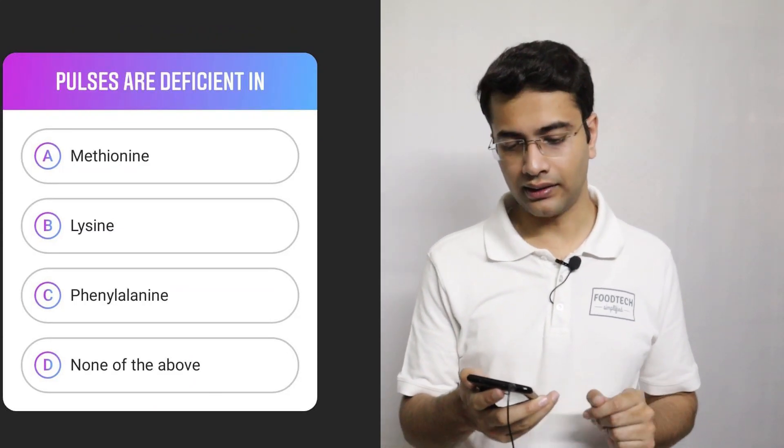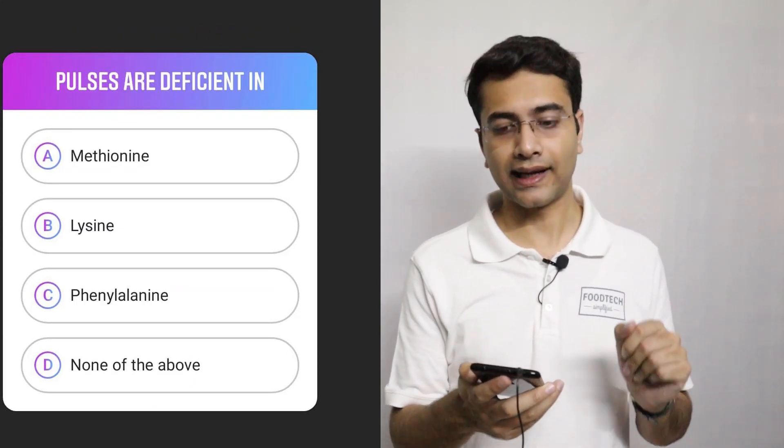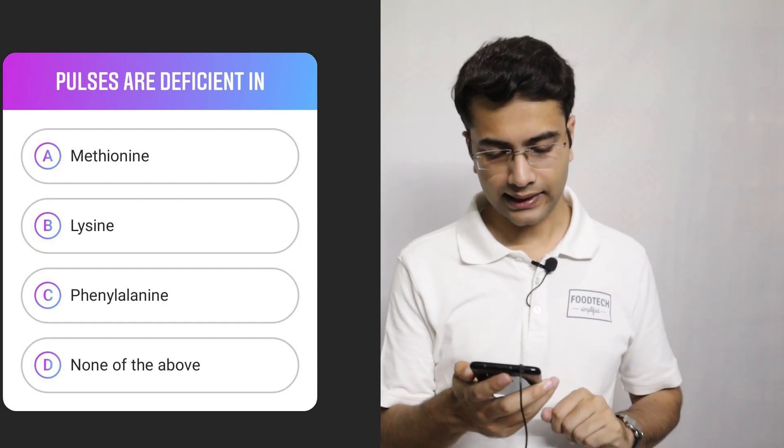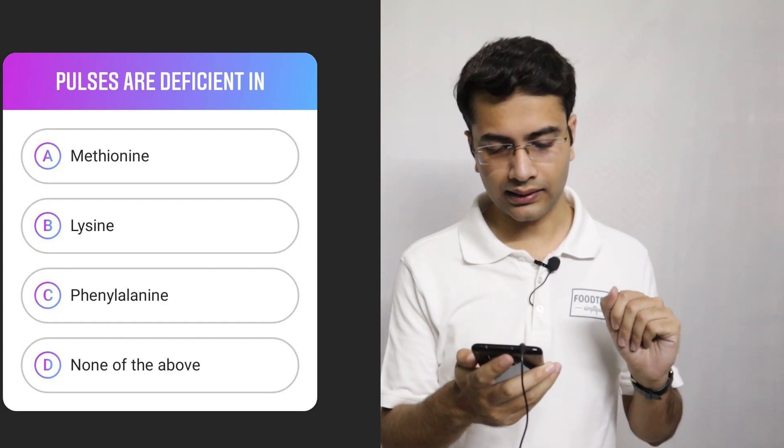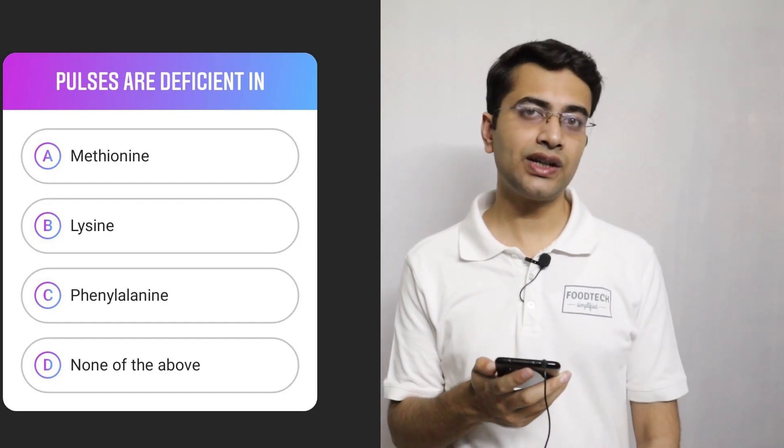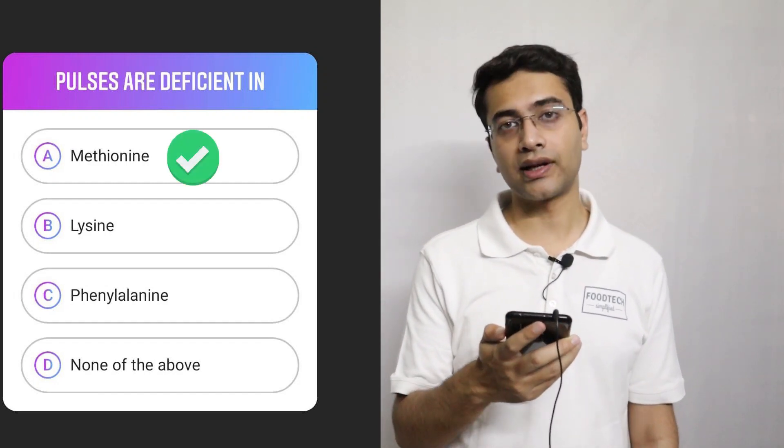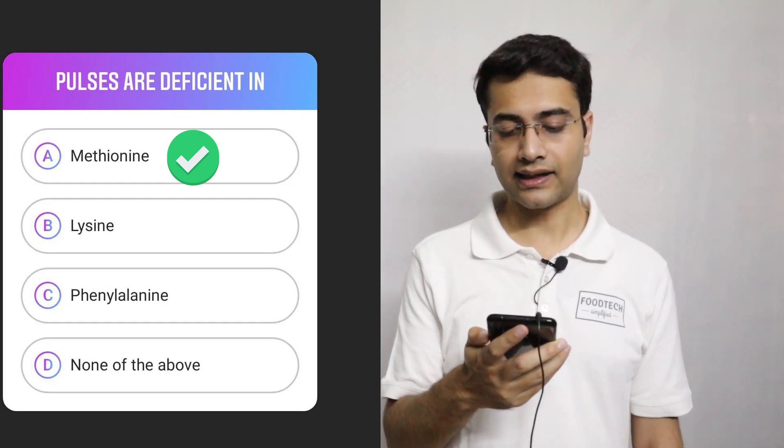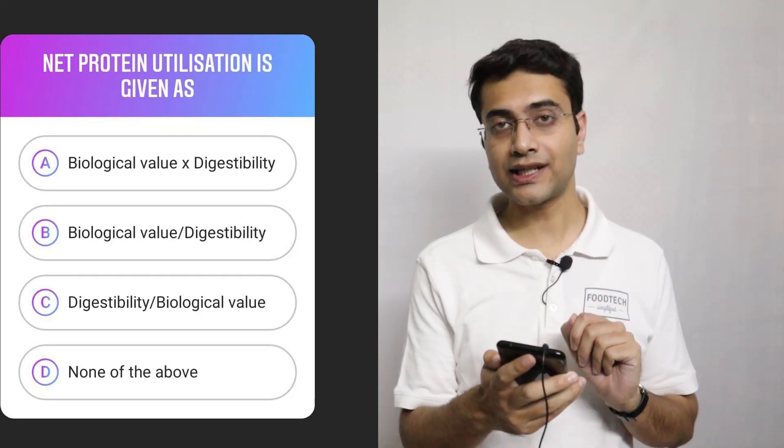Moving on to the next one. Pulses are deficient in option A methionine, option B lysine, option C phenylalanine, and option D is none of the above. So pulses are deficient in methionine. Methionine is the amino acid and pulses are deficient in methionine.